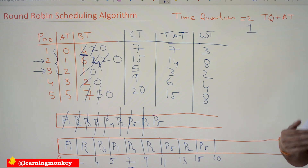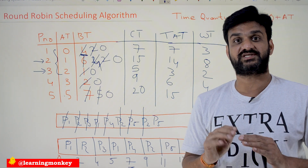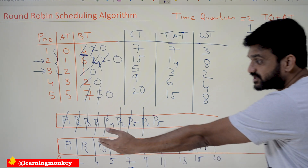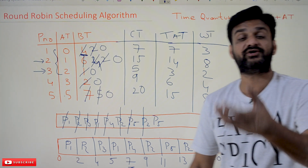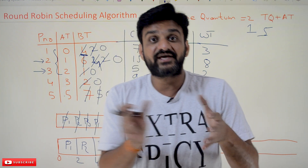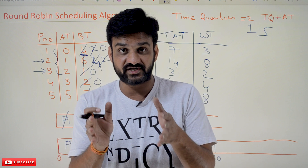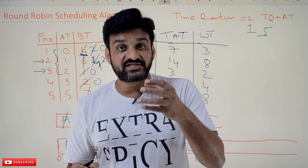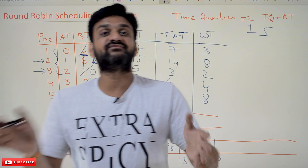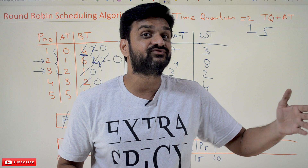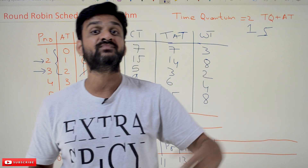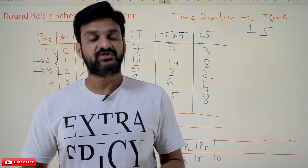On the other hand, if the time quantum is large — for example five units — then starvation increases. Processes with short burst times have to wait for long periods, which is what we call starvation. So, a large time quantum causes starvation, while a small time quantum causes excessive context switches. The time quantum must be chosen efficiently to avoid negatively affecting the overall performance of the system.